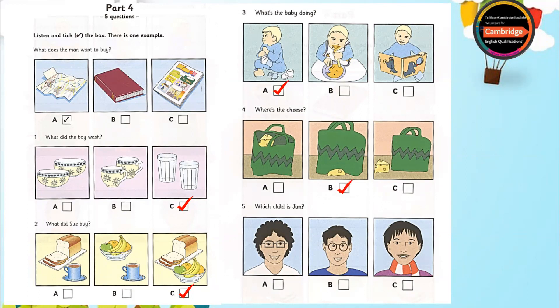5. Which child is Jim? Here come the children. And there's my son, Jim. The boy with the curly hair? No, that's his friend. Jim's got straight hair and glasses. Oh, yes. I can see him. He's talking to the boy with the scarf. That's right.